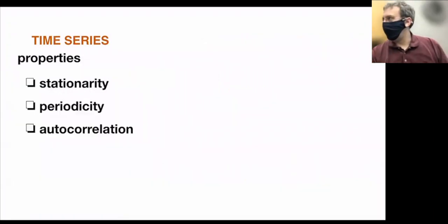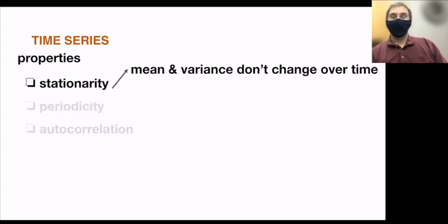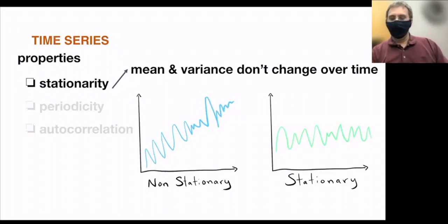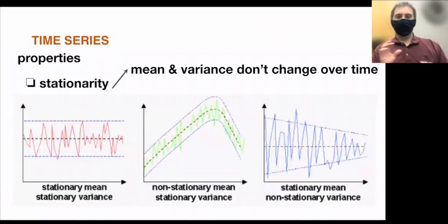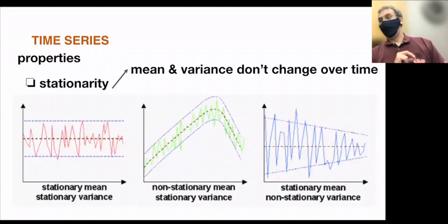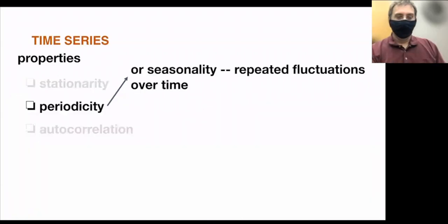Time series have some common properties, and this relates to the types of modeling used for prediction and classification. There's something called stationarity, which means the mean and the variance don't change over time. The stationary example on the right has a stable mean and variance. The non-stationary one has a mean that's slowly increasing. Other examples show combinations: stationary mean with non-stationary variance, or non-stationary mean with stable variance.